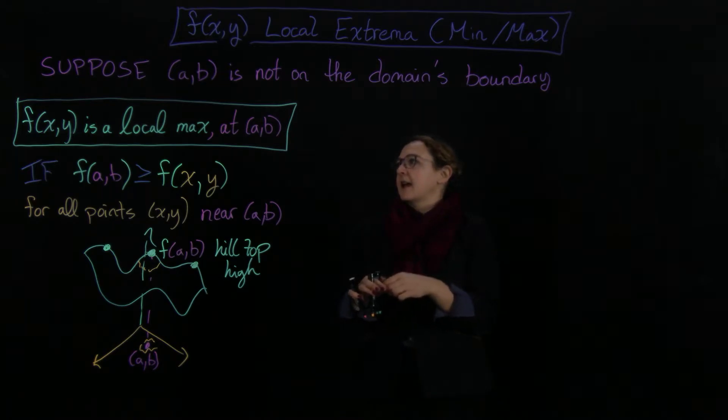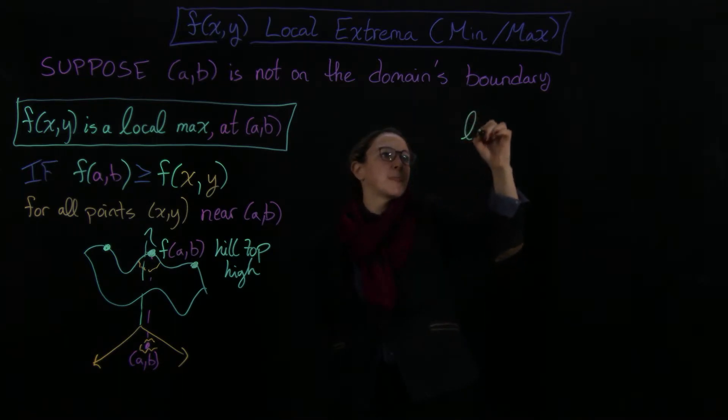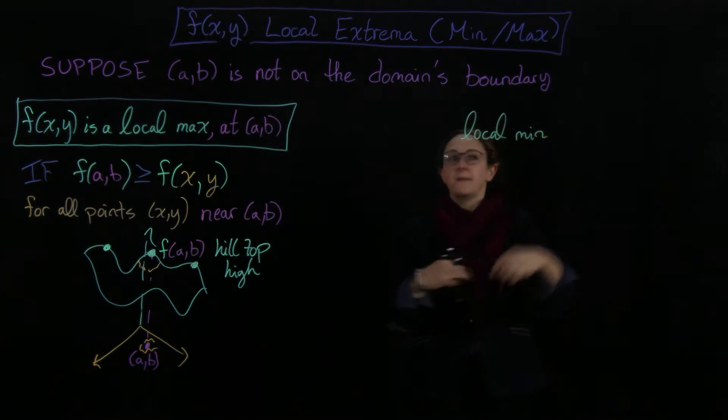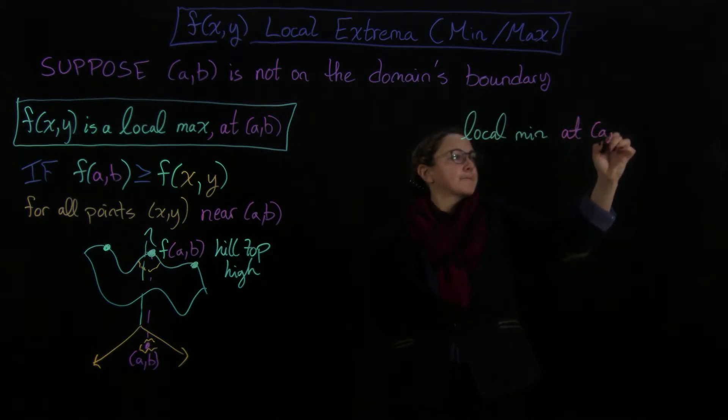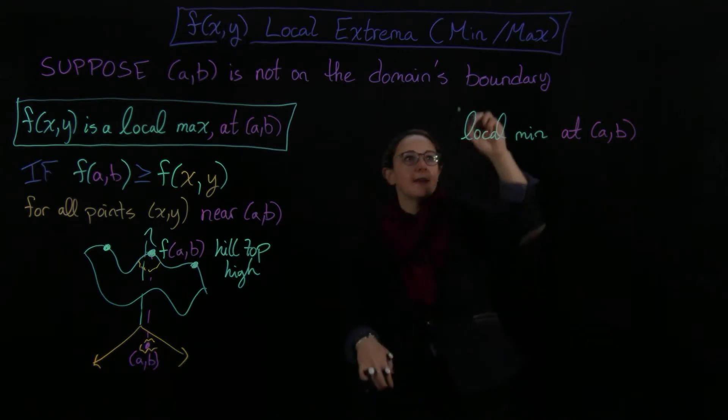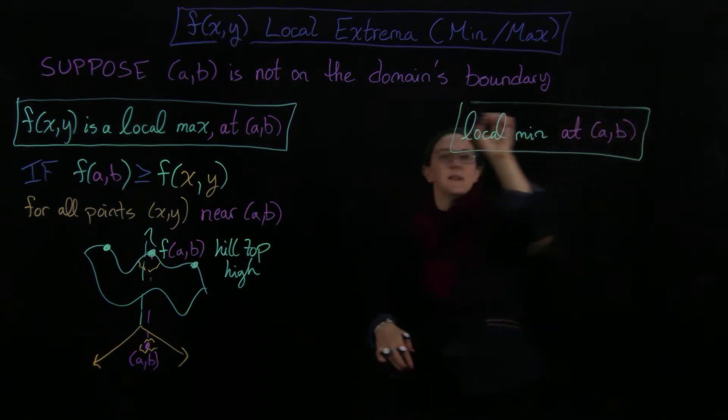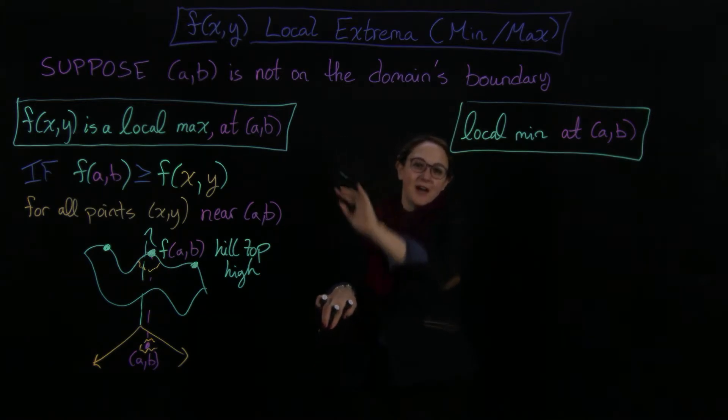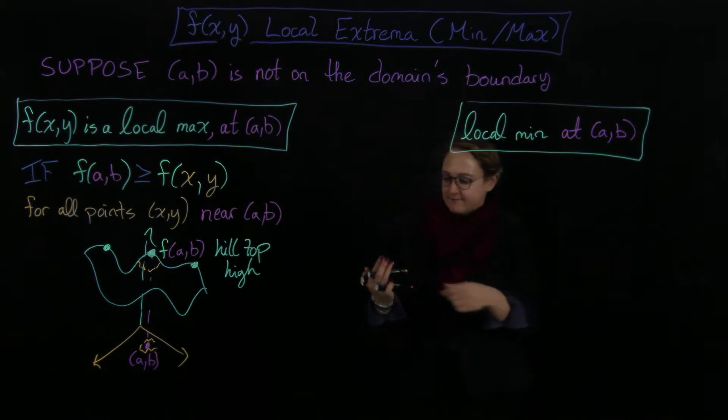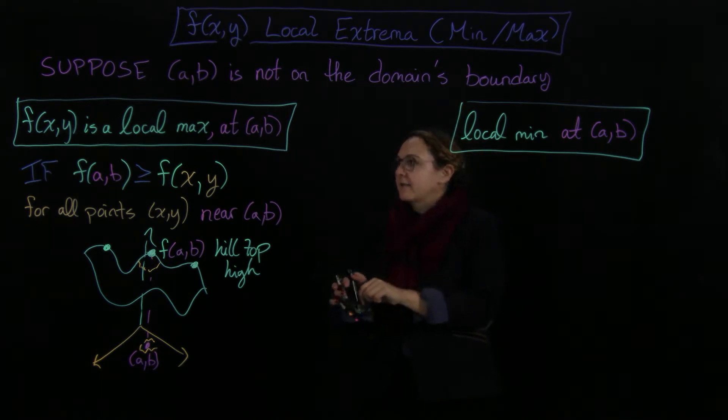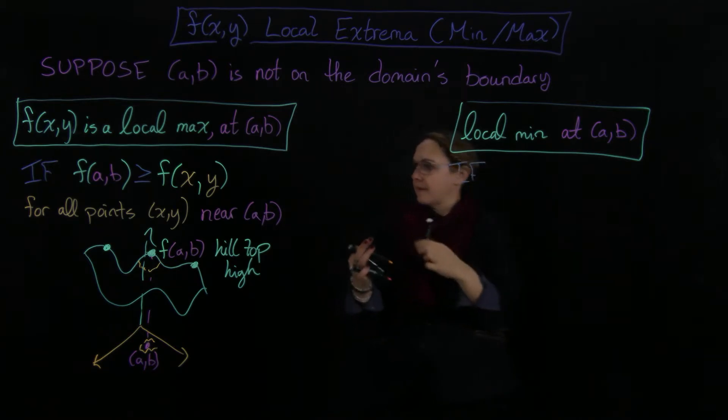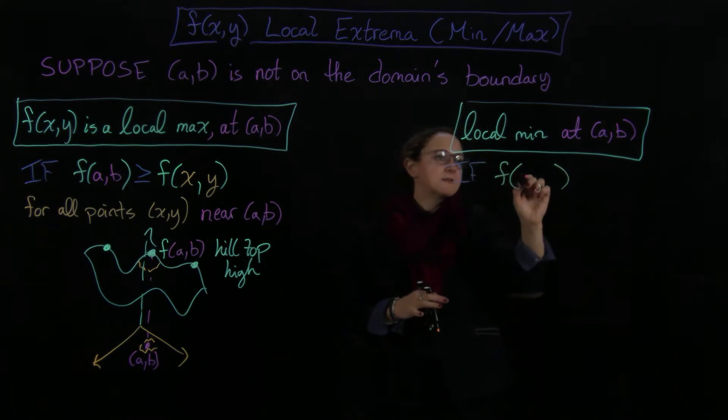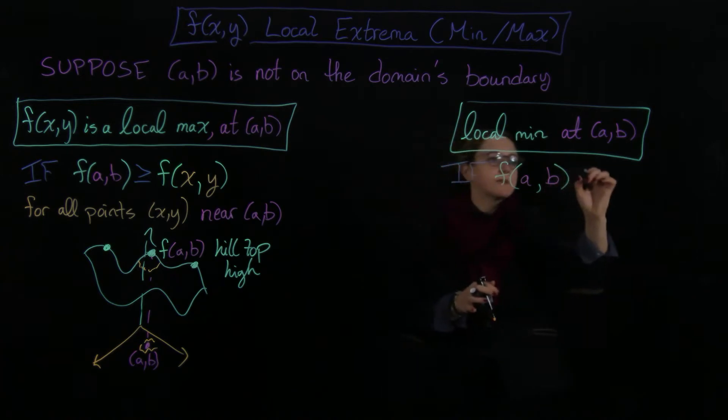And then we would say that f(x,y) is a local min at (a,b) if we had that, and this is just the opposite inequality. So this is like when you're looking at points nearby, this is the lowest point. So that was the hilltop high, this is going to be the valley low. So we're going to get if we have that f(a,b) now is going to be the low point. So it's going to be less than or equal to all of the points close by.